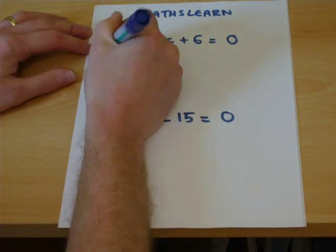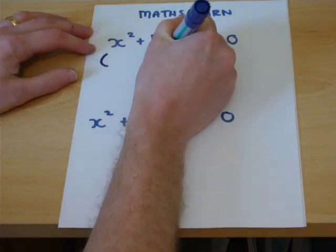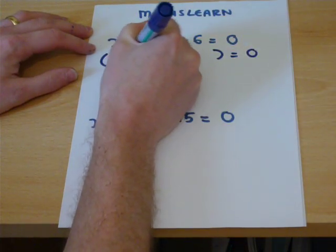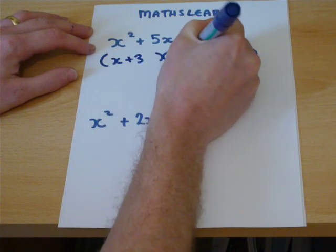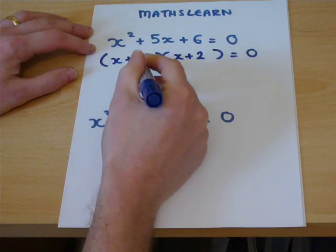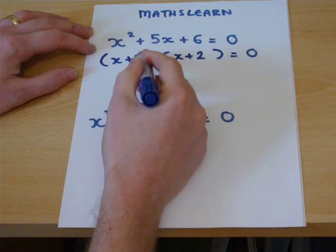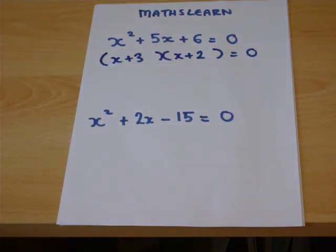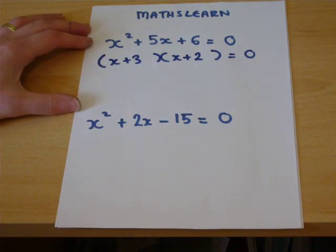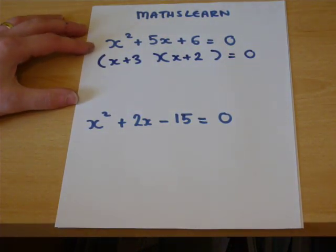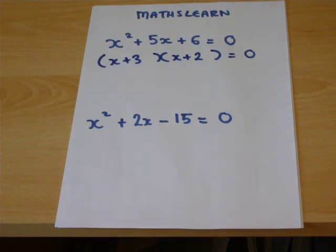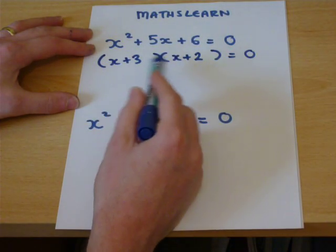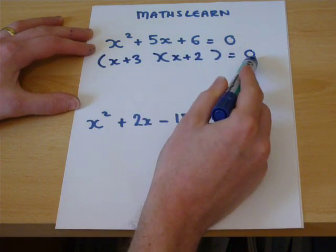And it is fairly easy to see that those numbers are 3 and 2. 3 times 2 is 6, 3 plus 2 is 5. And it has been converted into a pair of double brackets. And the reason this trick works is because if one can factorise we have two things times together to make 0.